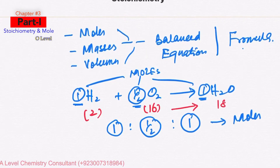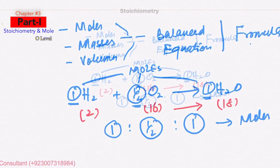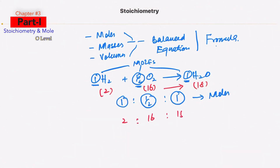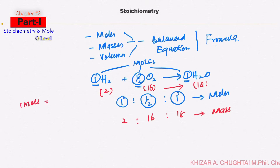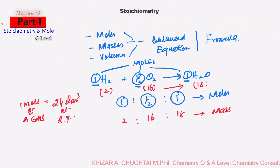They both are making 16 plus 2 = 18 grams of water, so the mass ratio from this balanced chemical equation is 2 : 16 : 18. We can also find the volume ratio from the balanced chemical equation. One mole of a gas has a volume equal to 24 dm³ at RTP (room temperature and pressure), and we can convert the moles of a gas into volumes.